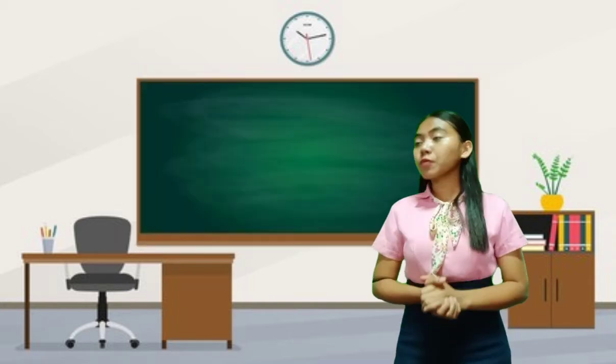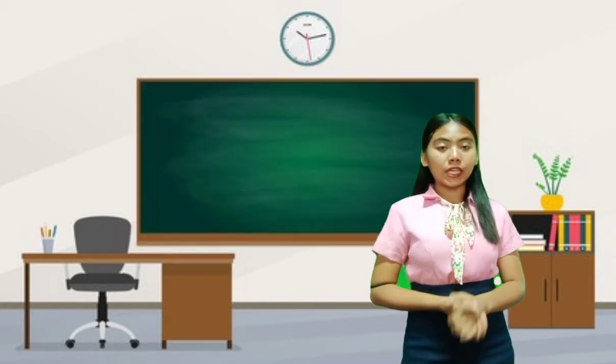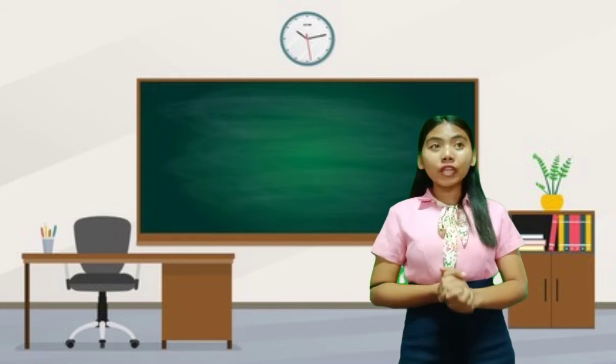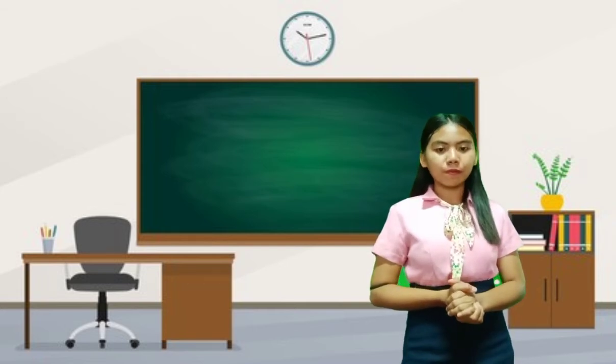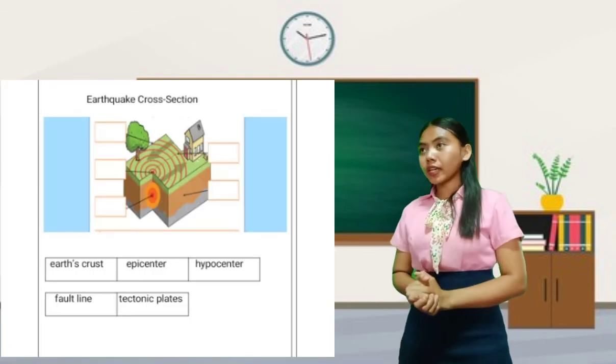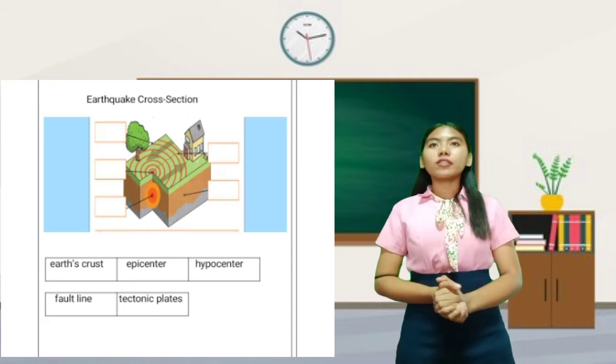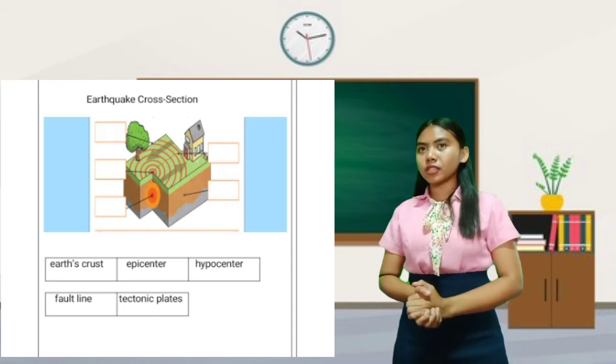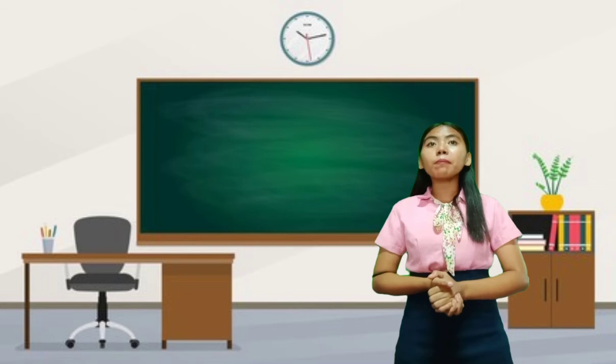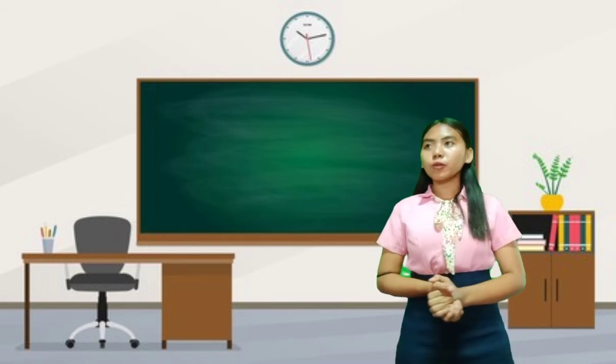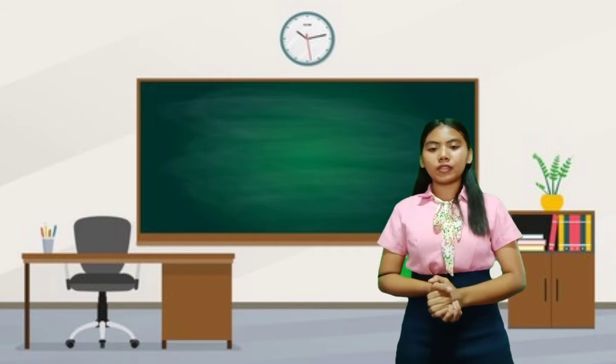So let's proceed to our group activity. I will group you into four groups and each group will be given a task to perform. Using a diagram, label the different parts of the cross-section of an earthquake and choose your answer from the choices below. Describe each part of the cross-section and give a conclusion on your activity.